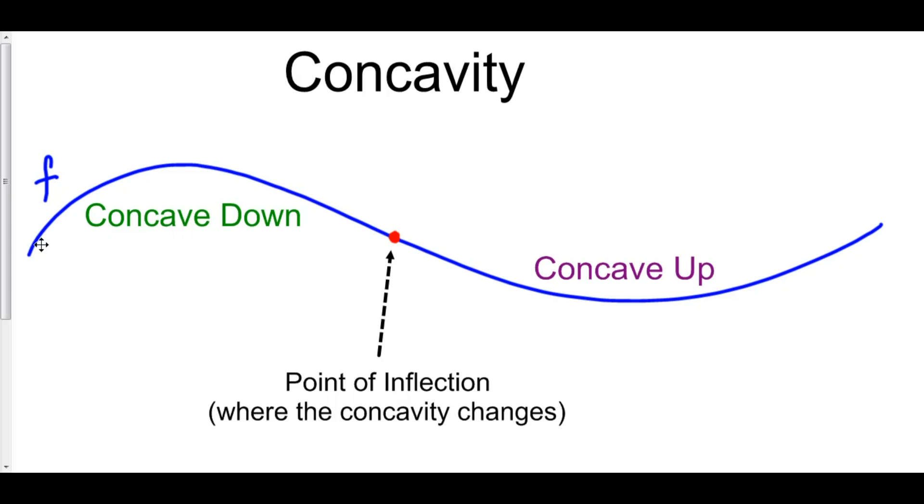So if your function looks like a hill, then it's concave down. But if your function looks like a valley, we call this concave up.